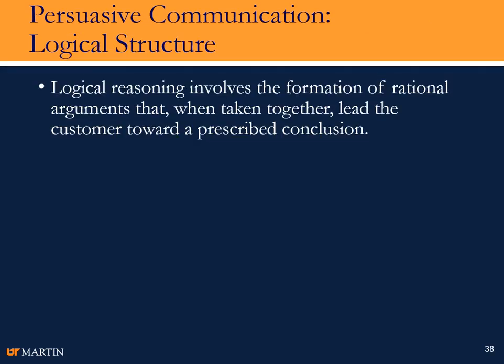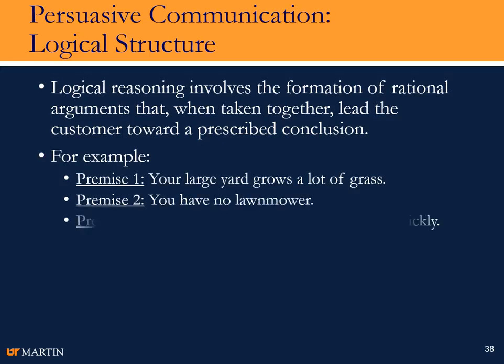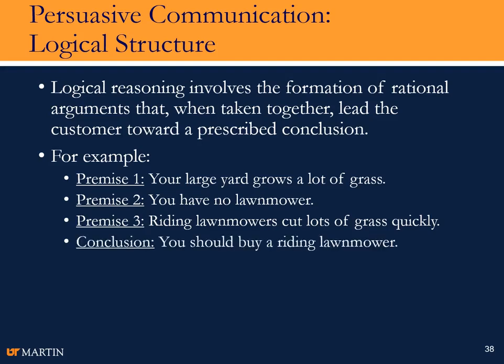The last piece of persuasive communication we want to talk about is logical structure. Logic reasoning involves the formation of rational arguments that, when taken together, lead the customer toward a conclusion you want them to reach. For example, with premises like: your yard grows a lot of grass, you have no lawnmower, and riding lawnmowers cut lots of grass quickly — the conclusion is clear: they should buy a riding lawnmower. It's three steps to a prescribed conclusion.